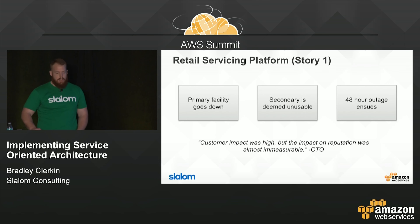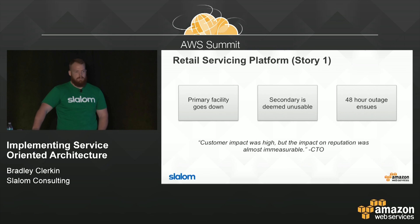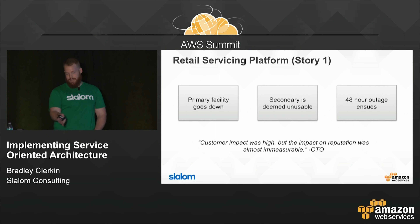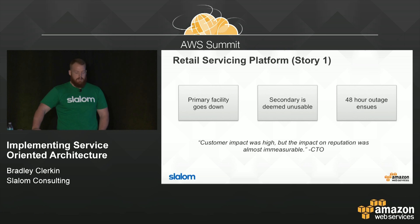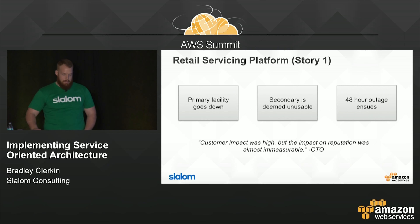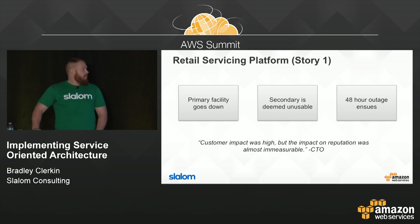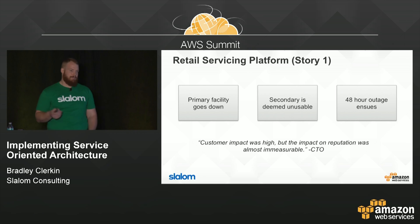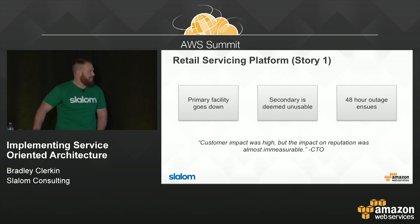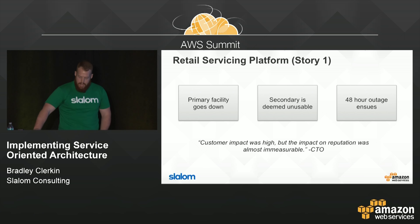The first migration story is about a retail servicing platform — a platform-as-a-service provider for many of the big clothing manufacturers in the world. Their primary facility hosted their platform as a service, and I can't believe I'm saying this in 2015, but they had a single source of power in the colo facility. It's a very well-known colo provider. That power failed pretty miserably and the primary facility went down.